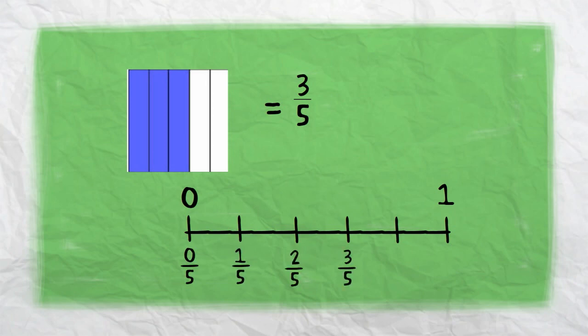As you can see, as our fractions increase, we get to five fifths, which equals one, we locate three fifths, and we plot it on our number line.